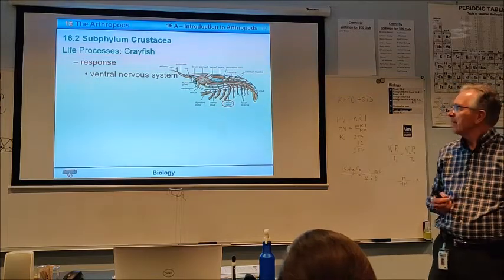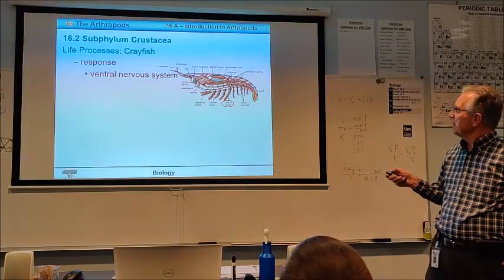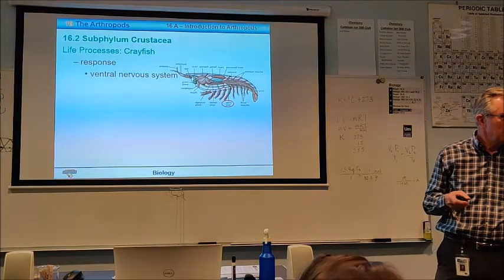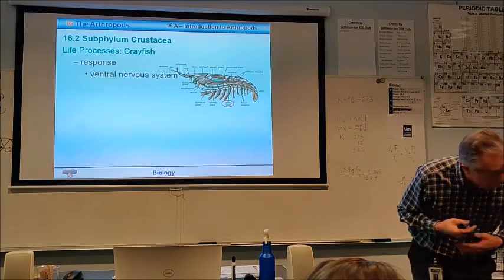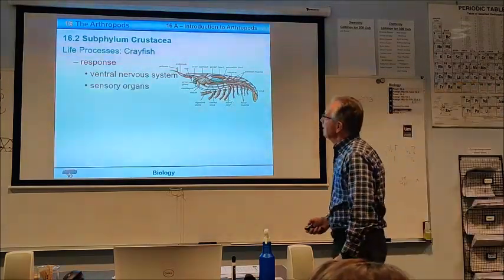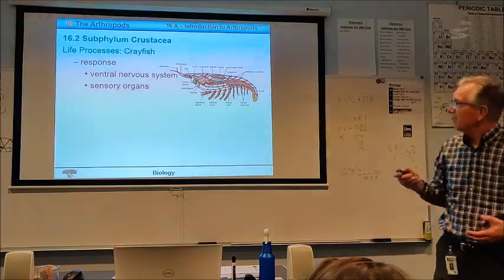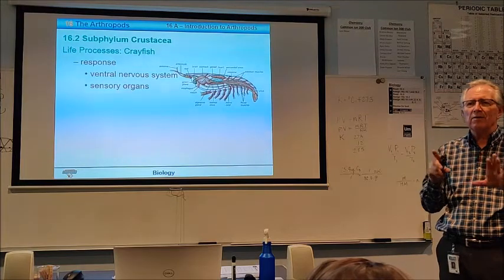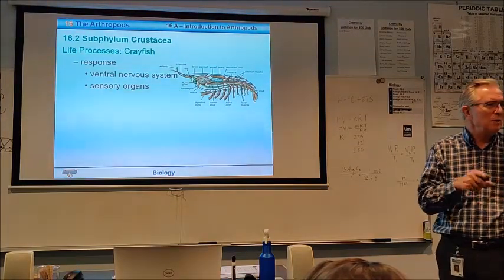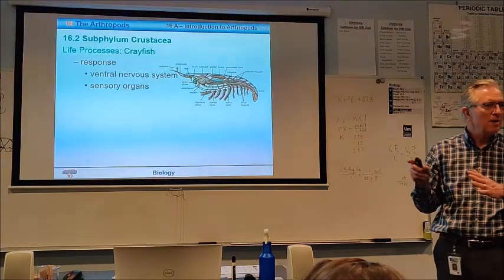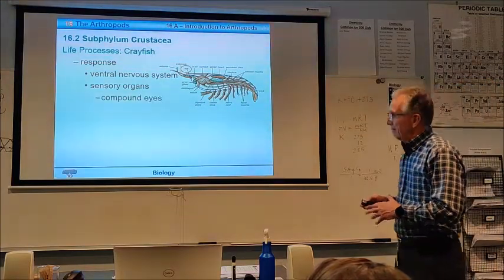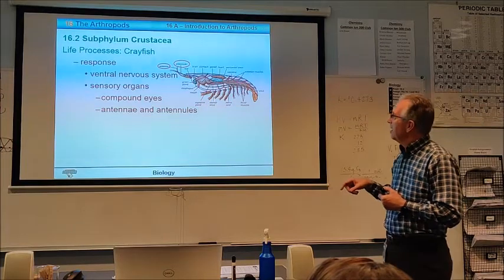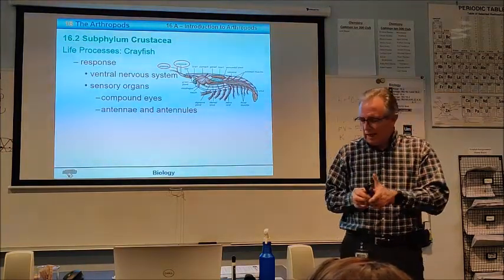Now, as far as response, they have a ventral nervous system. That means it runs on what part of the body? Ventral is which side? Well, like the front if you're standing up, but these were laying down, so it would be on the bottom. They have a number of sensory organs. They have these antennae and antennules. As you study the crayfish, they'll cover what's the difference between them, what does one do, what does the other one do? One senses vibrations, the other one senses things like smell and taste and things like that. We said also that already that they have compound eyes. They don't have simple eyes, though. They just have compound eyes, and their eyes are on little stalks.